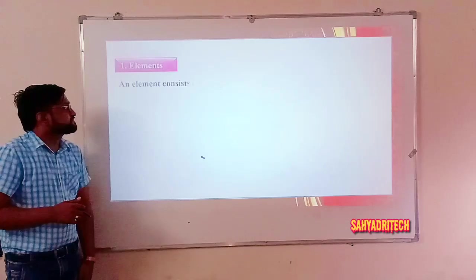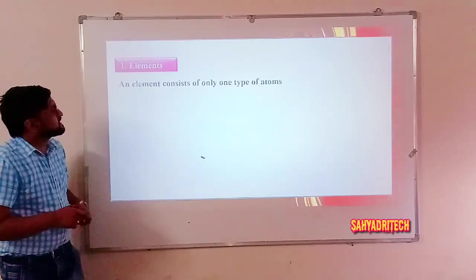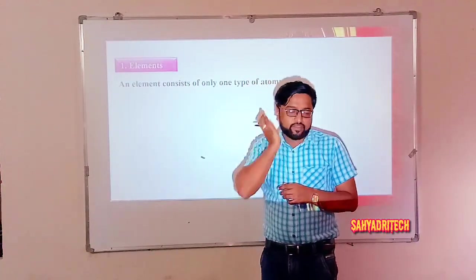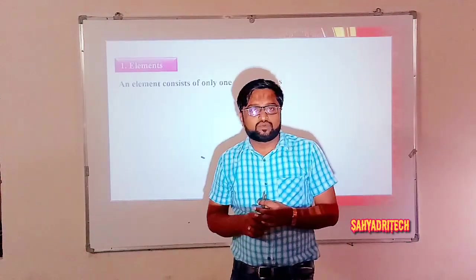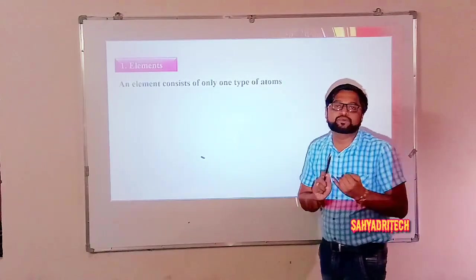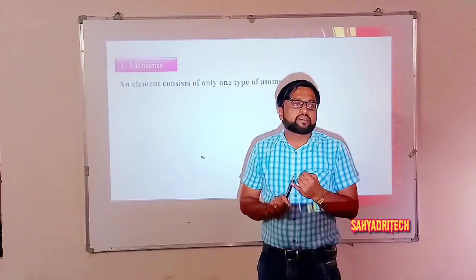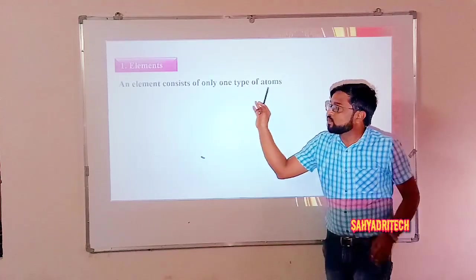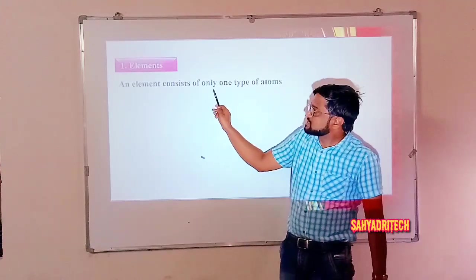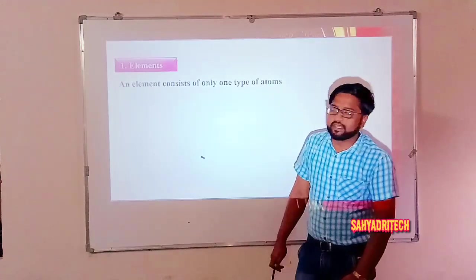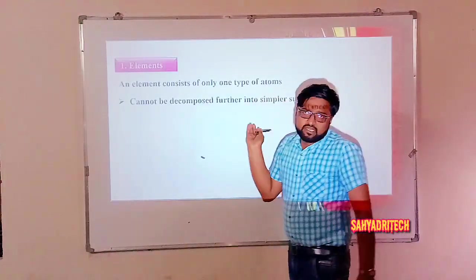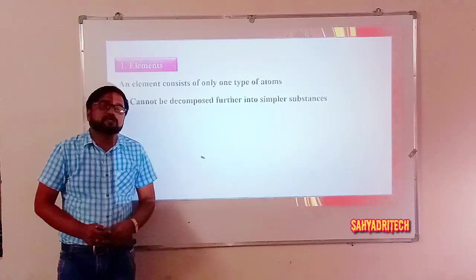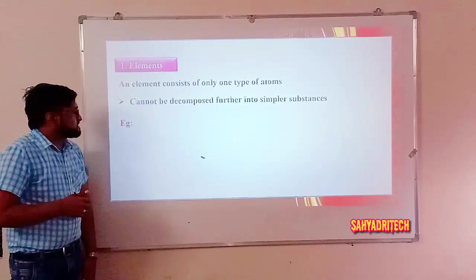Coming to elements — an element consists of only one type of atom. We know about 120 elements in the periodic table. Elements are a kind of pure substance. They consist of only one type of atom and cannot be decomposed further into any simpler substances.